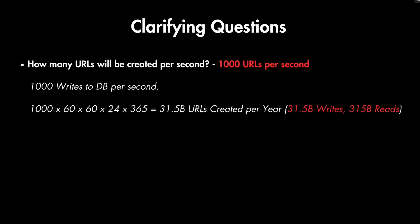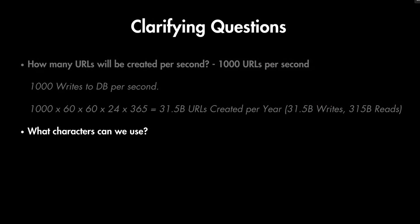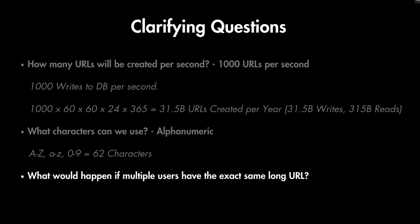If we assume 10 times more reads than writes, that means 315 billion reads every year. Another question: what characters can we use? The typical answer is alphanumeric — letters A to Z uppercase and lowercase, plus digits 0 to 9, giving 62 characters total. One last question: if multiple users have the exact same URL, should we map them to the same short URL or create one per person? Let's assume we always create a new short URL for each user to give them each a unique shortened URL.